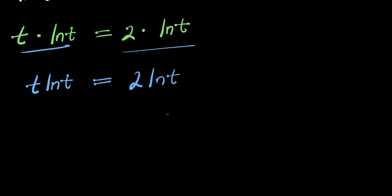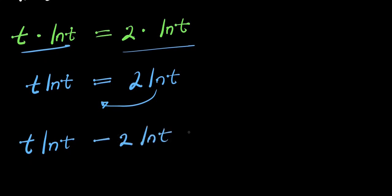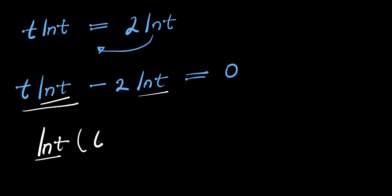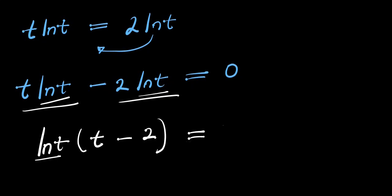The next step: we move the right side over. We have t·ln t minus 2·ln t equals zero. There is ln t in both terms, so we can factor that out. Dividing each term by ln t gives us (t minus 2), so we have ln t times (t minus 2) equals zero.